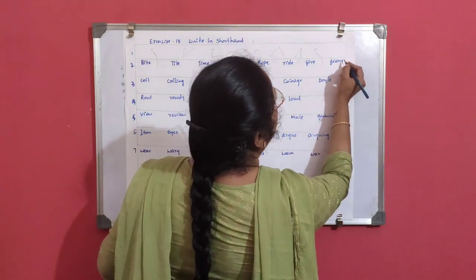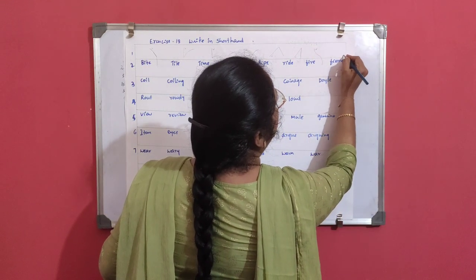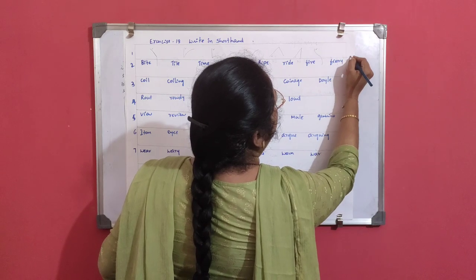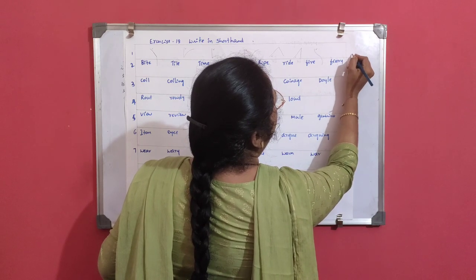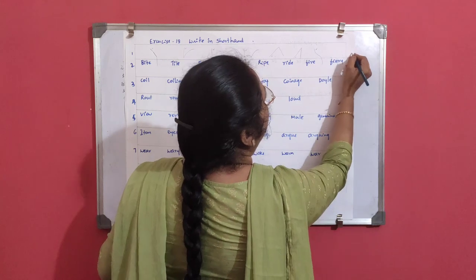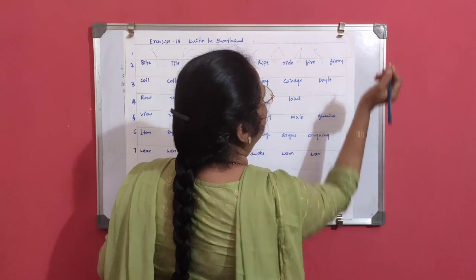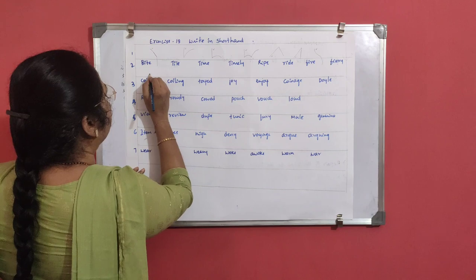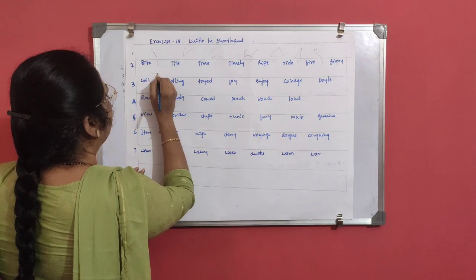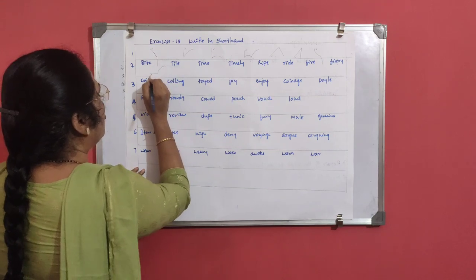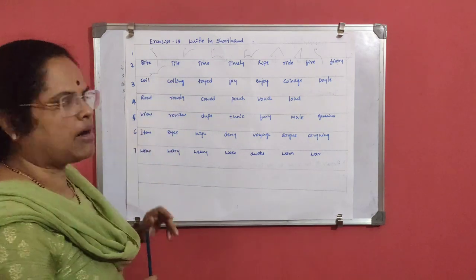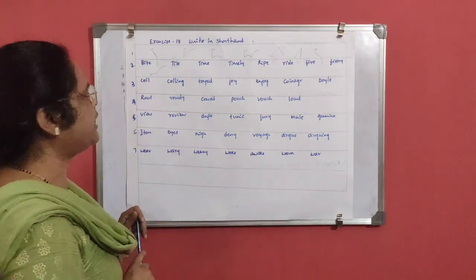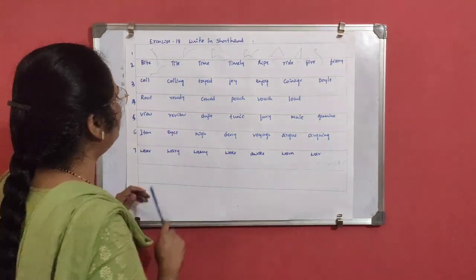Theory: here there is no place for the first stroke, so F goes through the line, then upward R, E over after R. Coil: K above the line, L. This is the OI diphthong, which is also marked at the first place, so the first stroke should be above the line.